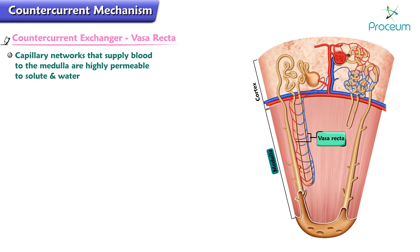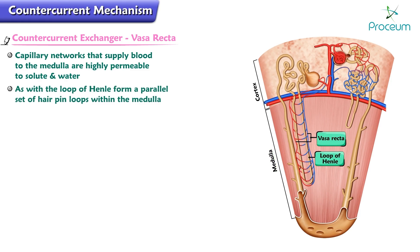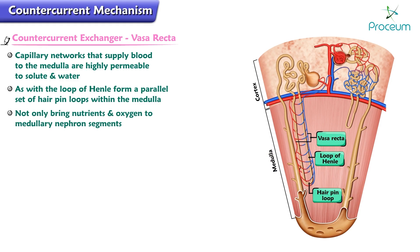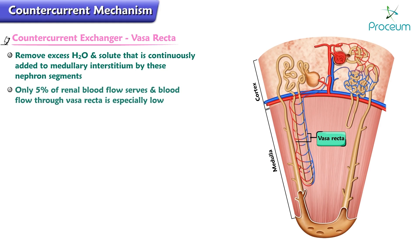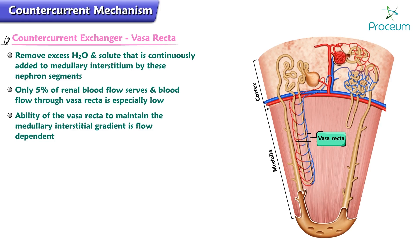The counter-current exchanger, or vasa recta: the vasa recta are capillary networks that supply blood to the medulla and are highly permeable to solute and water. Like the loop of Henle, the vasa recta form a parallel set of hairpin loops within the medulla. Not only do the vasa recta bring nutrients and oxygen to the medullary nephron segments, but more importantly they also remove the excess water and solute that is continuously added to the medullary interstitium. Only five percent of the renal blood flow serves the medulla, so blood flow through the vasa recta is specially low.